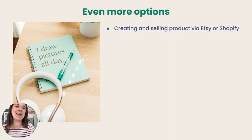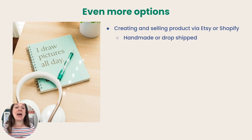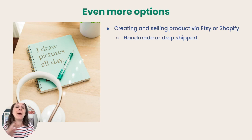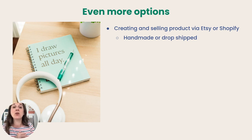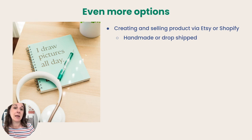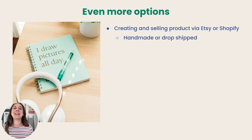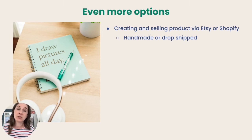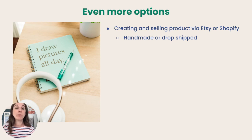You could create and sell products via Etsy or Shopify — either handmade or drop shipped. You could get a greeting card order, print it out, fold it, package it, and mail it out yourself. Or with drop shipping, you partner with someone who manufactures products like mugs, enamel pins, or keychains. When you get an order, the software contacts your drop shipping company, they take your art, print it on their product, and send it out to your customer.